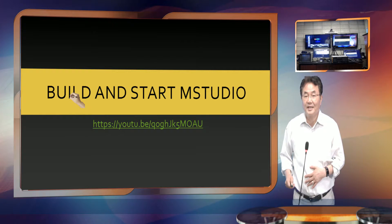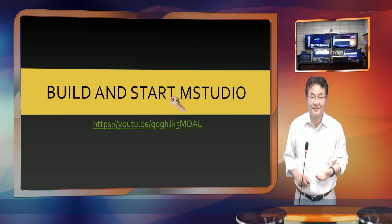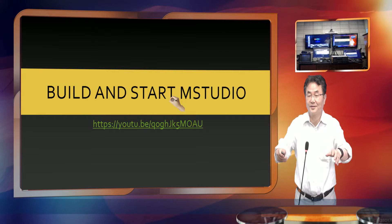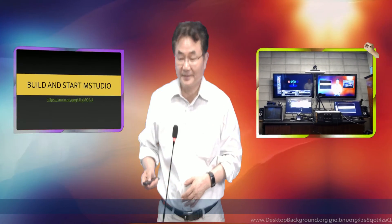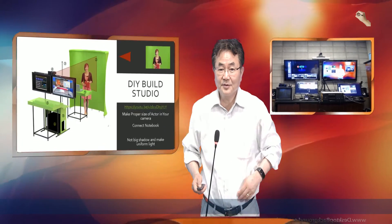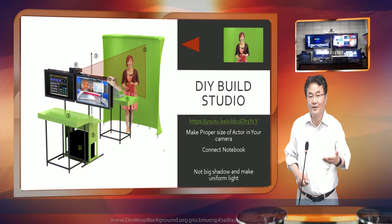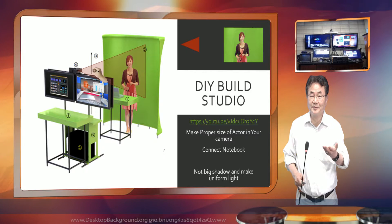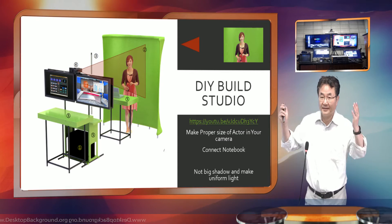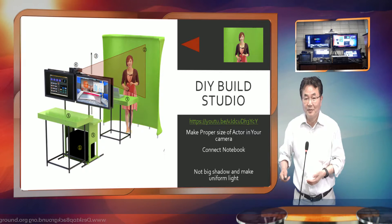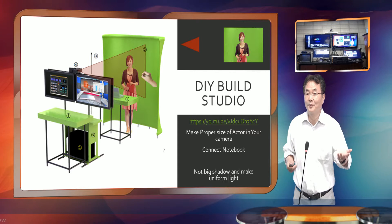First we have to build the studio — the broadcast station, the monitors, controls, everything. It's like I am doing here; we have a studio building. The studio building means you need MStudio like this. You build a console, you put the monitor, you put the camera, then lighting and background — the chroma key. Once you have chroma key, you can do the same thing as I am doing, just using the pointer with no other operation at all.